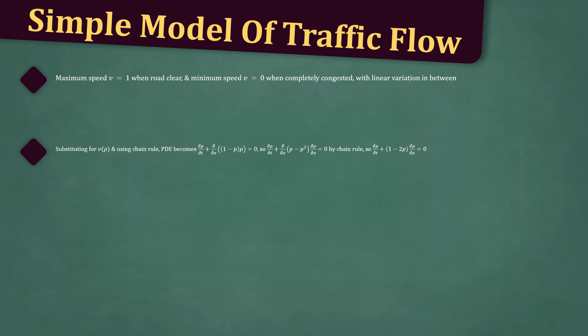So, ∂ρ/∂t + ∂(ρ - ρ²)/∂x · ∂ρ/∂x = 0 by the chain rule.